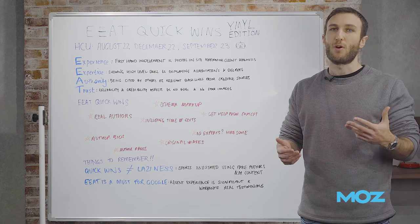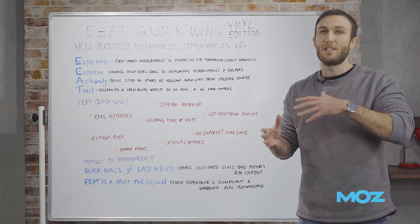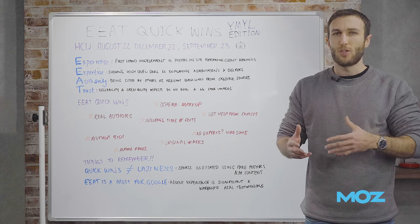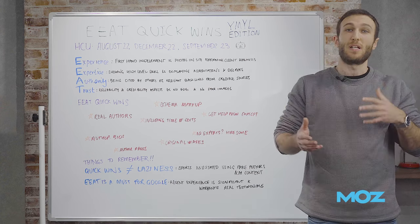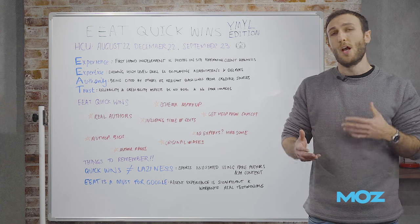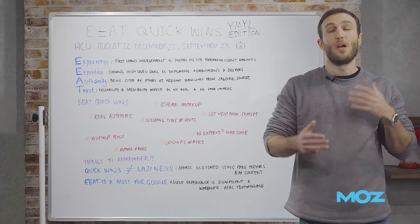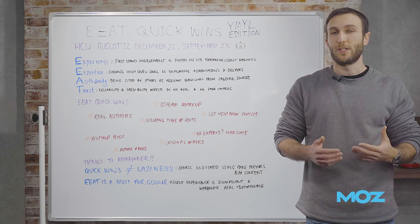The third one is authority, and this is about being cited in certain publications and websites that are authoritative in your niche. This can come in the form of having relevant backlinks from credible sources in your industry.